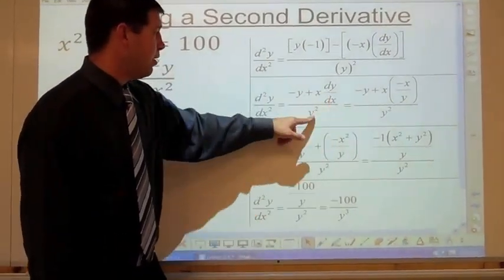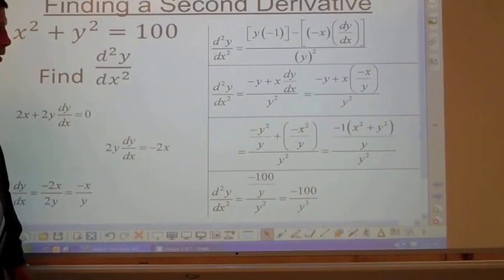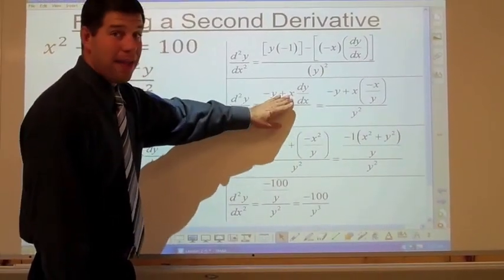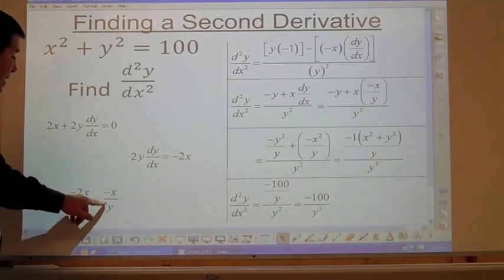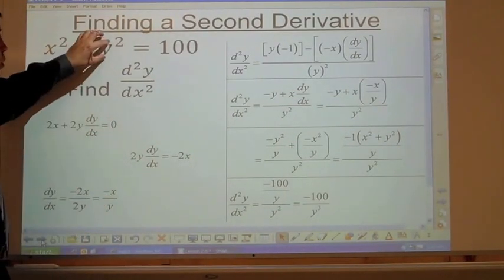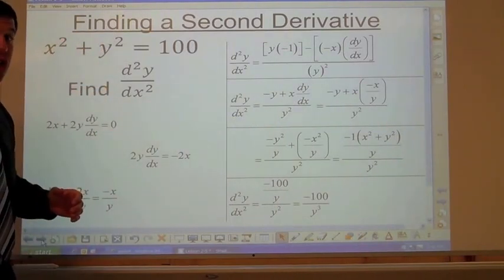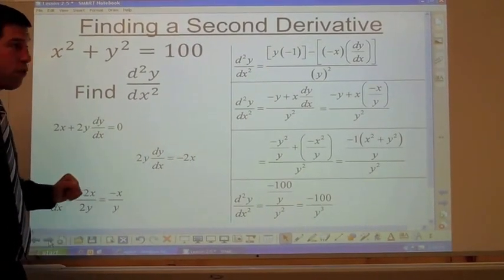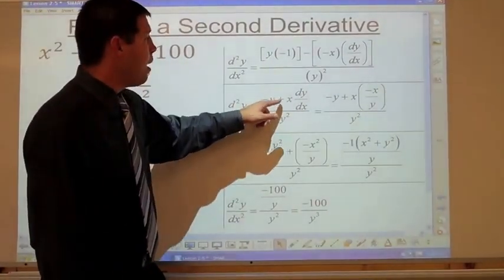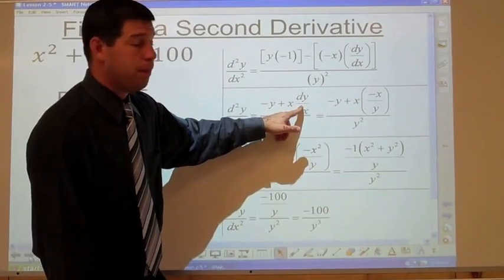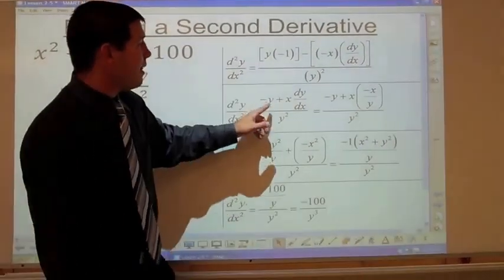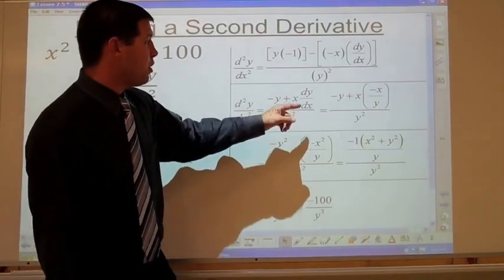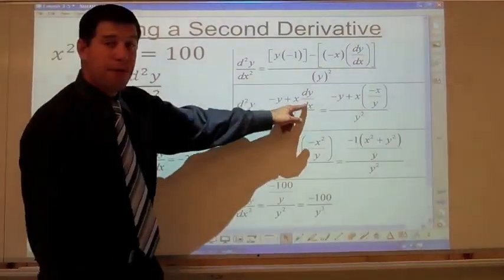We have negative y plus x dy/dx over y squared. Here's where it gets creative: we already know dy/dx equals negative x over y from the first derivative. Substitute that in: negative y plus x times (negative x over y), all over y squared.